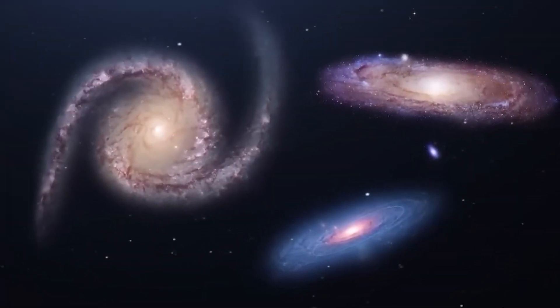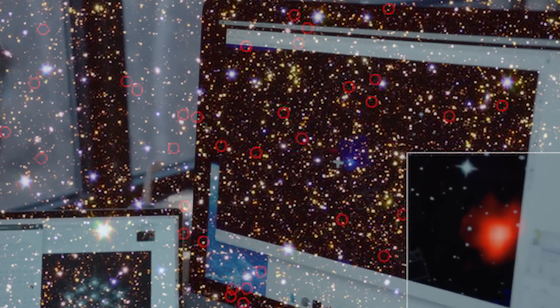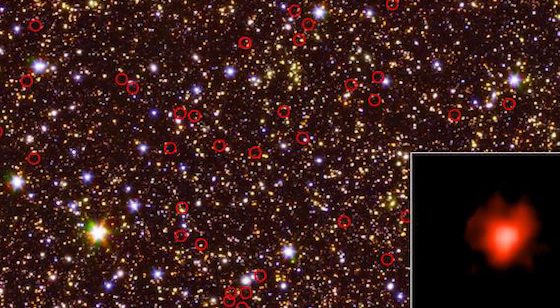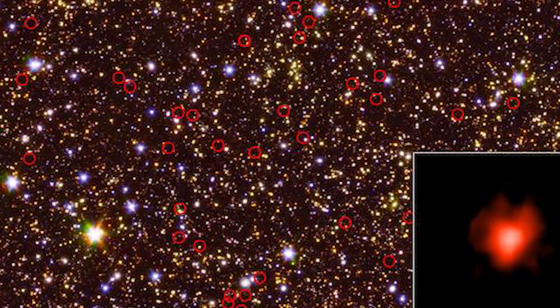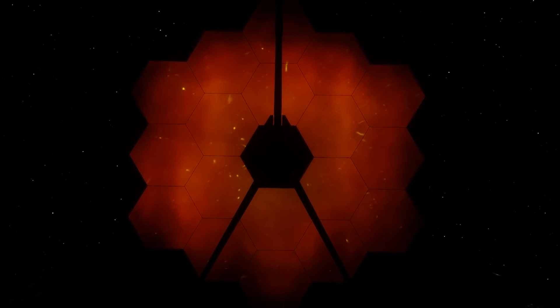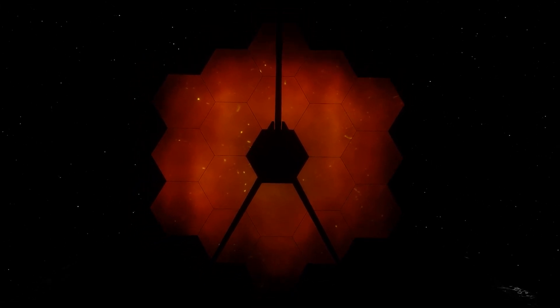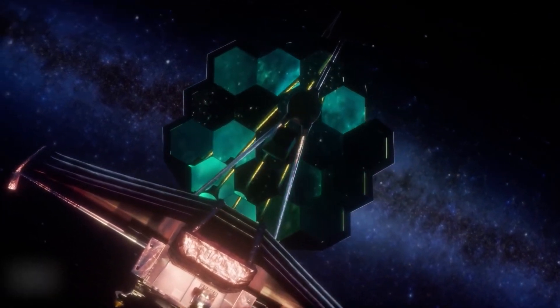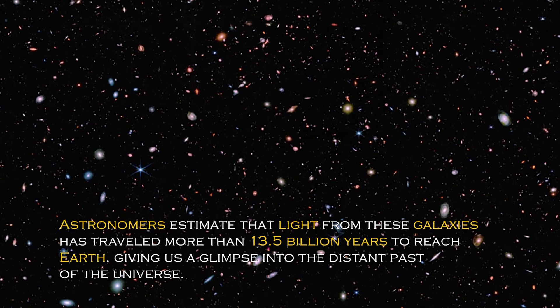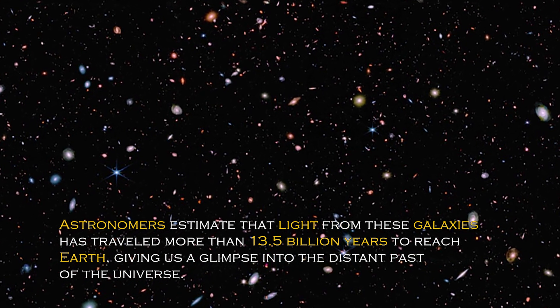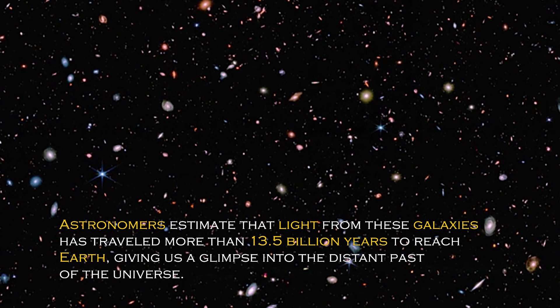Another stunning discovery stumped scientists when researchers found primordial galaxies at the edge of the universe. They were skeptical about their authenticity. Some thought they might be nearby galaxies in disguise, so they shared the data with other scientists around the world. Amazingly, the James Webb Space Telescope confirmed that these ancient galaxies are real. Thanks to this revolutionary telescope, we can now observe the oldest galaxies ever seen. Astronomers estimate that light from these galaxies has traveled more than 13.5 billion years to reach Earth, giving us a glimpse into the distant past of the universe.